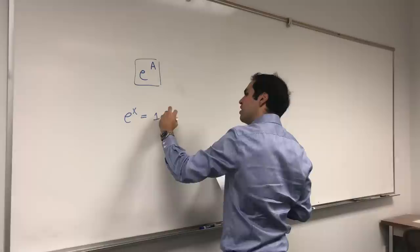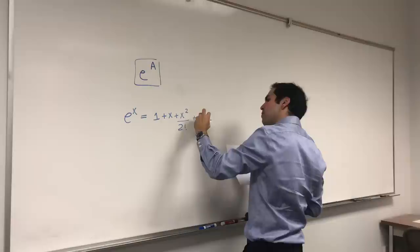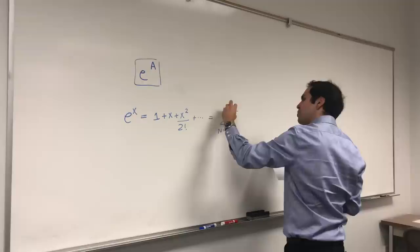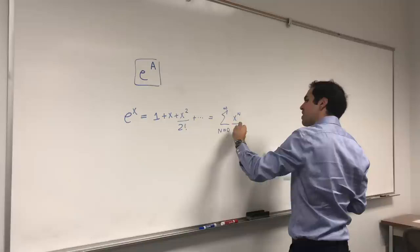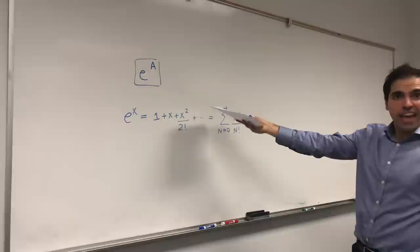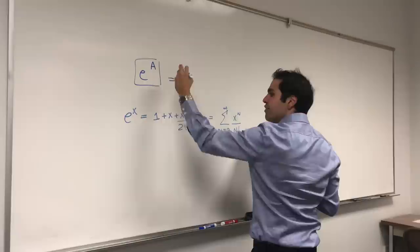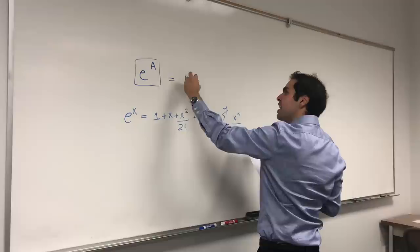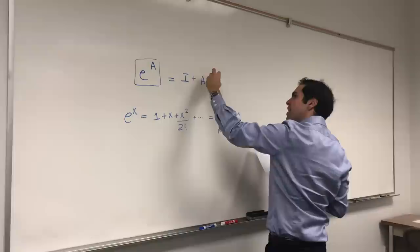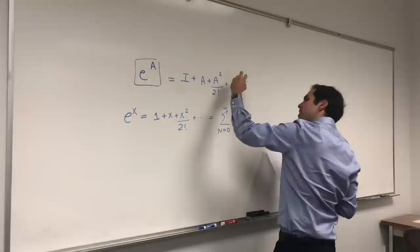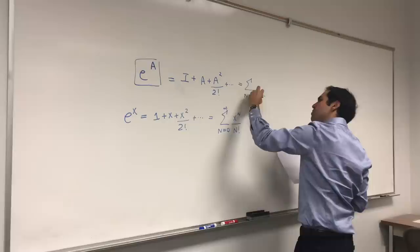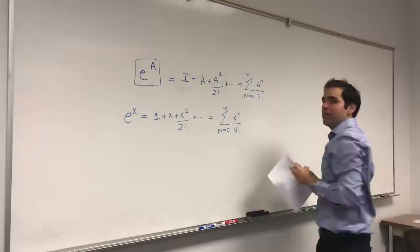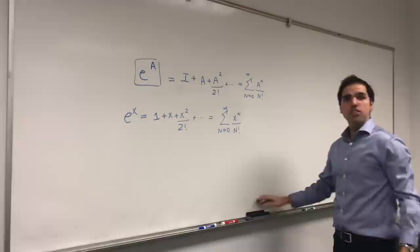Because remember the power series of e to the x? e to the x is 1 plus x plus x squared over 2 factorial plus dot dot dot, which is the sum from n from 0 to infinity of x to the n over n factorial. Well, we can do the same thing for the exponential of a matrix. It's defined by almost the same formula: 1 is just the identity matrix, x is just your matrix A, and then A squared over 2 factorial plus dot dot dot, which in general is the sum from n from 0 to infinity of A to the n over n factorial. Okay, and the question is, how do we calculate this?